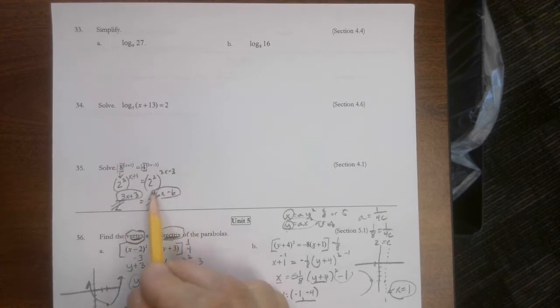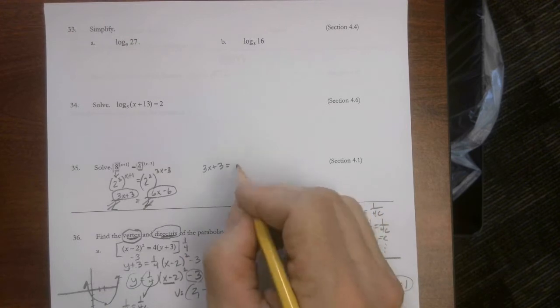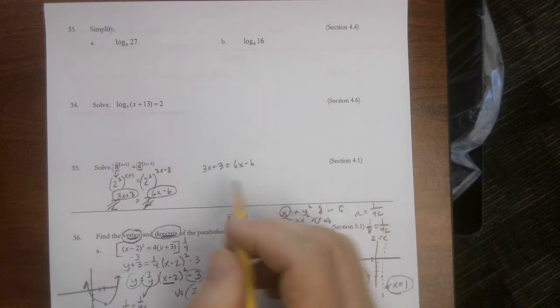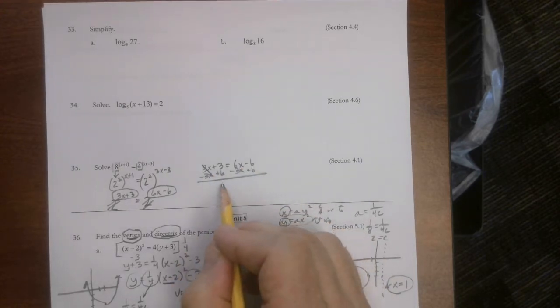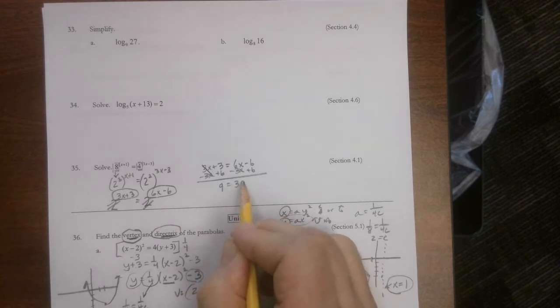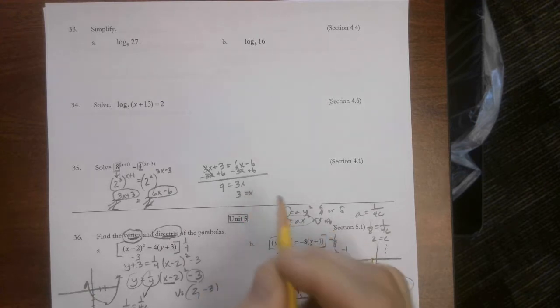So this is 2 to the 3x plus 3 power equals 2 to the 6x minus 6 power. Why do we want common bases? So that they can disappear. Now this has to equal this. So 3x plus 3 equals 6x minus 6. So I subtract 3x from both sides, add 6. This is 9 equals 3x. Divide by 3. Yeah, x is 3.